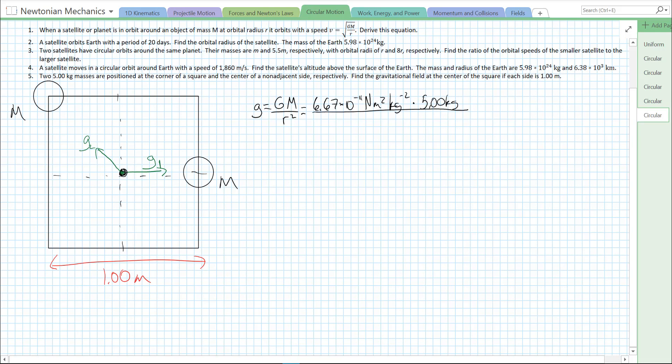And R is the distance from the center of the object to the location that we're looking at. Since it's one meter each side, then our R value, R1, is just 0.500 meters. So, it's going to be times 0.500 meters, that whole thing, squared.